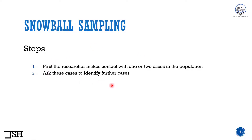The next step is to ask these cases to identify further cases. Once we are done taking the interview or survey from that person, we ask them for further references — whether they know somebody else who will be willing to participate. Think of it this way: I am giving that person a snowball and asking them to throw it to somebody else they know — a friend, acquaintance, or family member — who will be willing to participate in my interview or survey. That is why it's called snowball sampling.